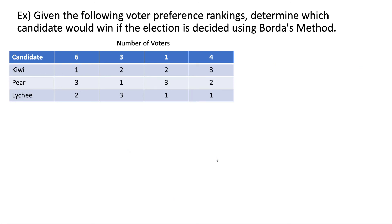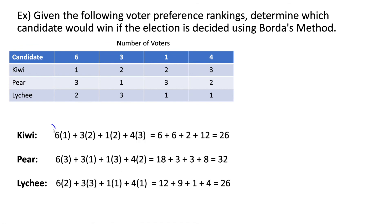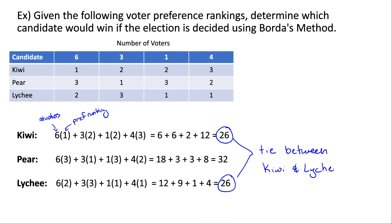Let's look at one more example. Given the following voter preference rankings, determine which candidate would win using Borda's method. Pause the video and try to solve it yourself first. The solution shows that we multiply the number of voters by their preference ranking for each group, then add across all ballots. It turns out that Kiwi and Lychee both have the lowest counts and are tied. So we can also have ties with Borda's method — your final answer would simply be that there is a tie between these two choices.